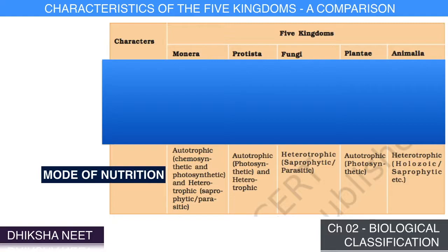In Fungi, only heterotrophic mode of nutrition is observed; it is either saprophytic or parasitic, and sometimes symbiosis is also observed. In Plantae, autotrophic photosynthetic mode of nutrition is observed. In Animalia, heterotrophic mode of nutrition is observed.